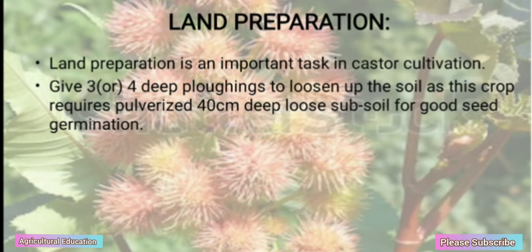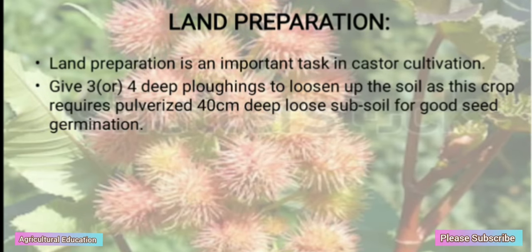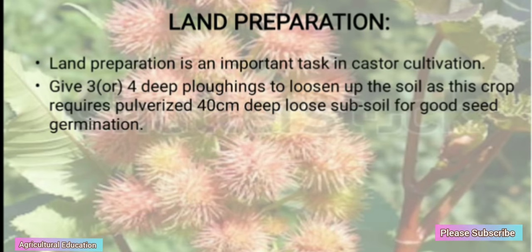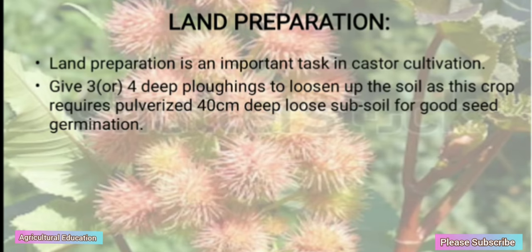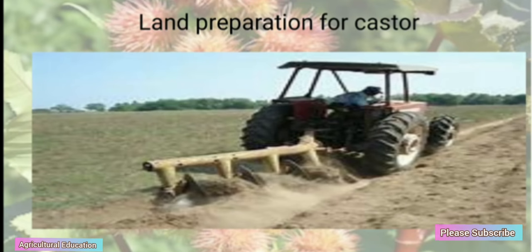Land Preparation: Land preparation is an important task in castor cultivation. Give 3 or 4 deep ploughings to loosen up the soil, as this crop requires a pulverized 40 cm deep loose subsoil for good seed germination.